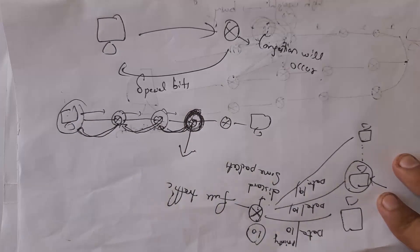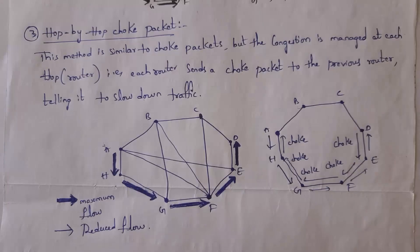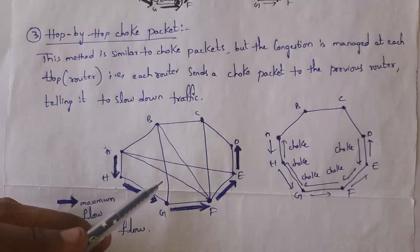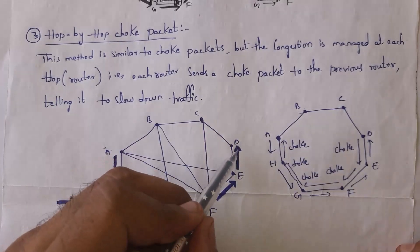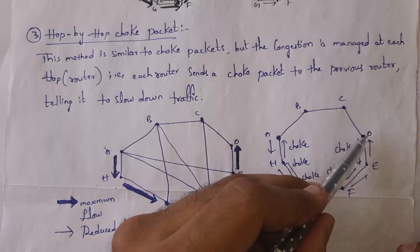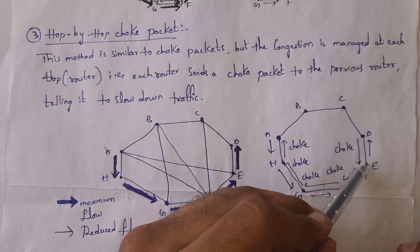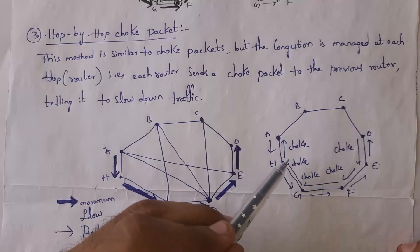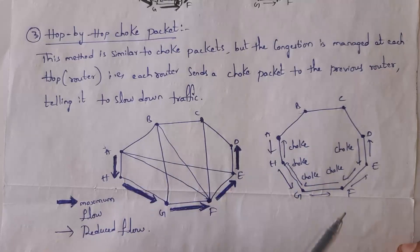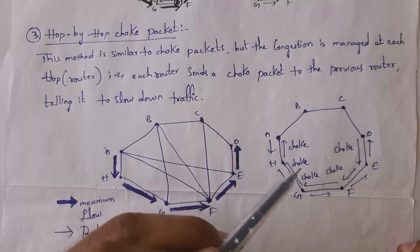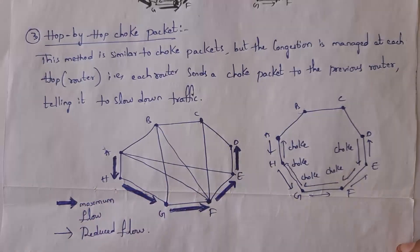The source computer will understand that congestion has occurred at that particular router and will send data slowly to avoid congestion. In this diagram, this router is transferring data very fast and congestion occurs at router D. Since router D is connected to router E, router D sends a choke packet to E, then E sends a choke packet to F, then G, then H, and finally H sends a choke packet to router A. Whenever router A receives the choke packet, it sends data slowly. This is the meaning of hop-by-hop choke packet.